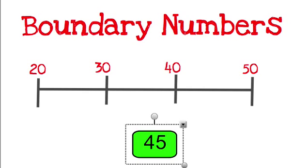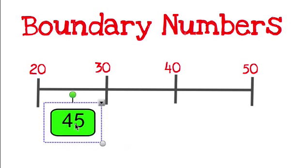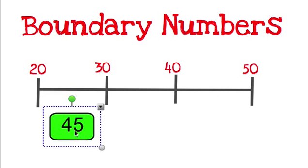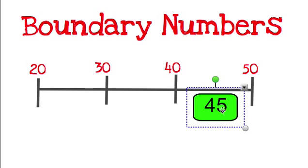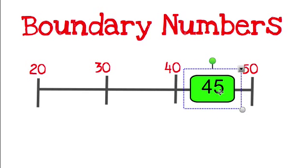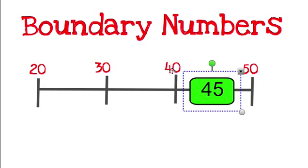Let's look at boundary numbers on a number line. Here I have my boundary numbers: 20 to 30, 30 to 40, 40 to 50. So when I'm looking at 45, I ask: does it go in between 20 and 30, 30 and 40, or 40 and 50? And 45 is in between 40 and 50, so 40 and 50 are called my boundary numbers.